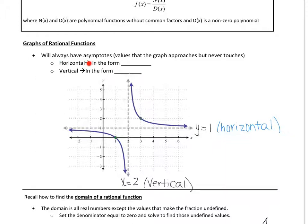So up top here, where it says horizontal: horizontal asymptotes are always going to be in the form y equals a number, and vertical asymptotes are always going to be in the form x equals a number. So vertical asymptotes are x equals, and horizontal asymptotes are y equals.